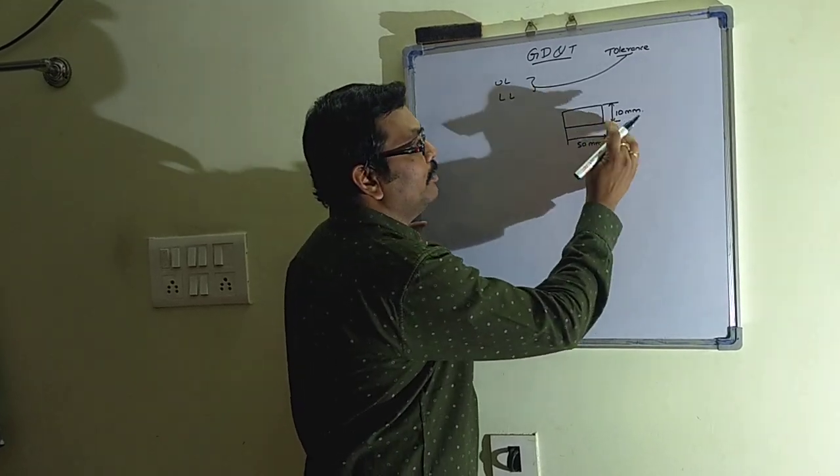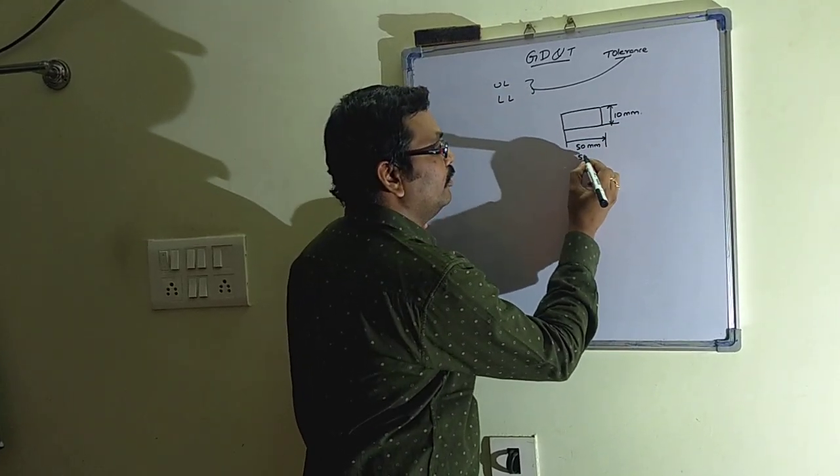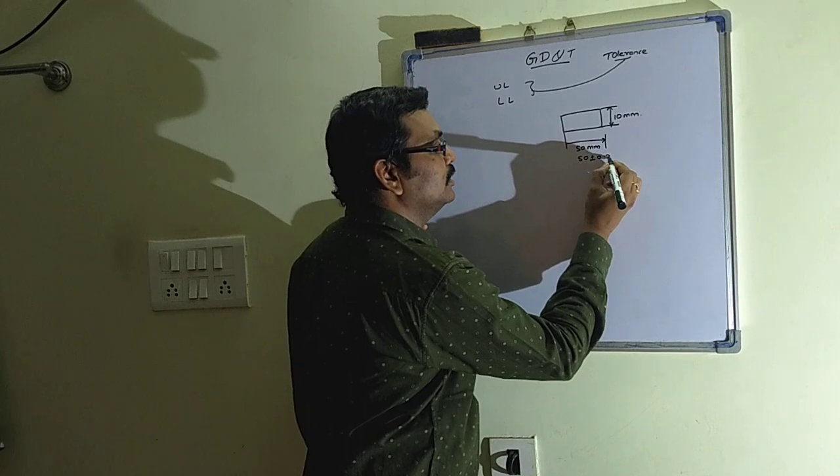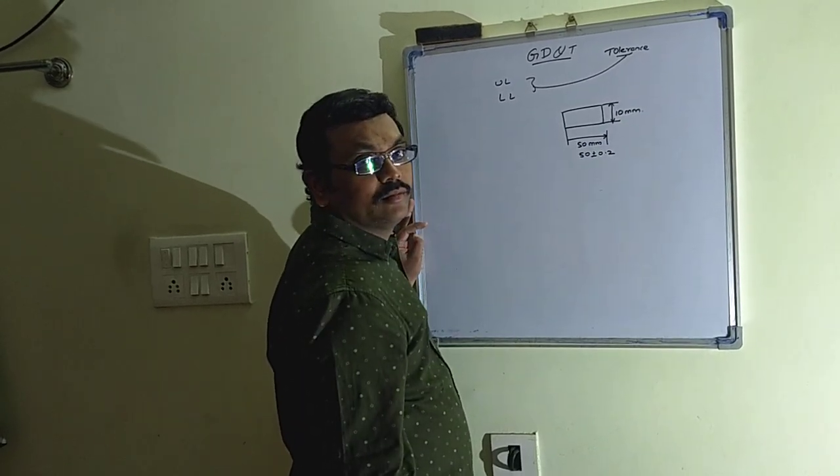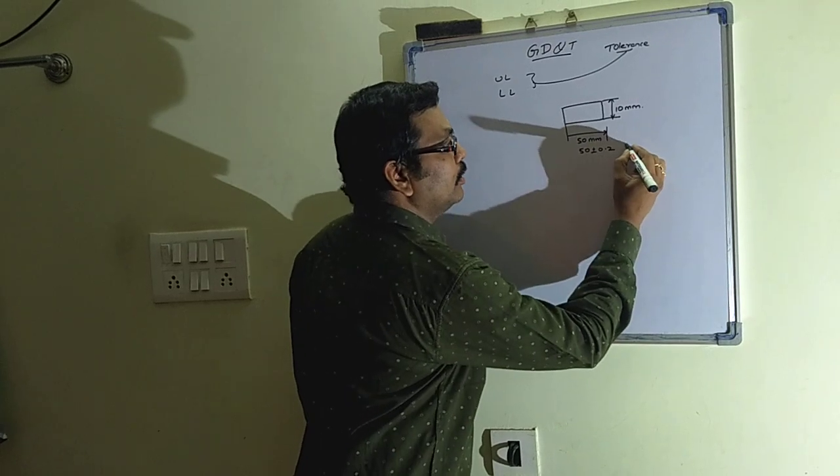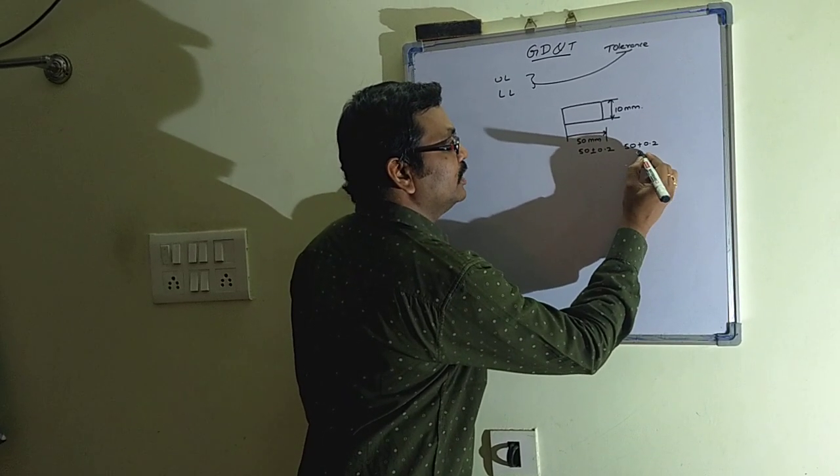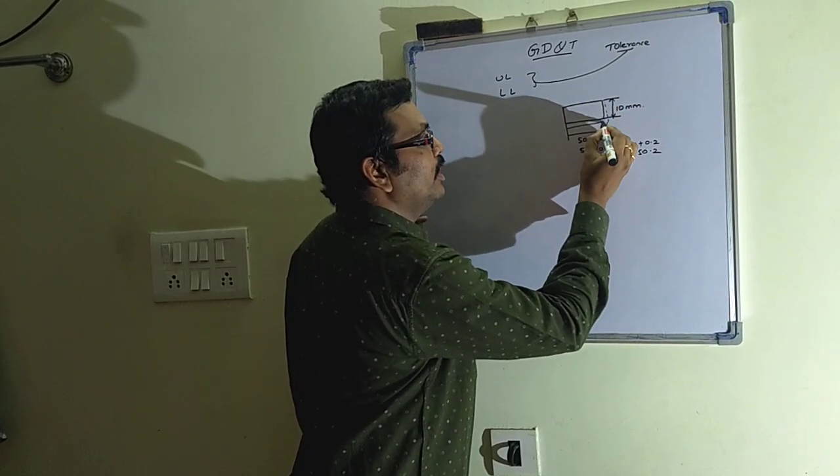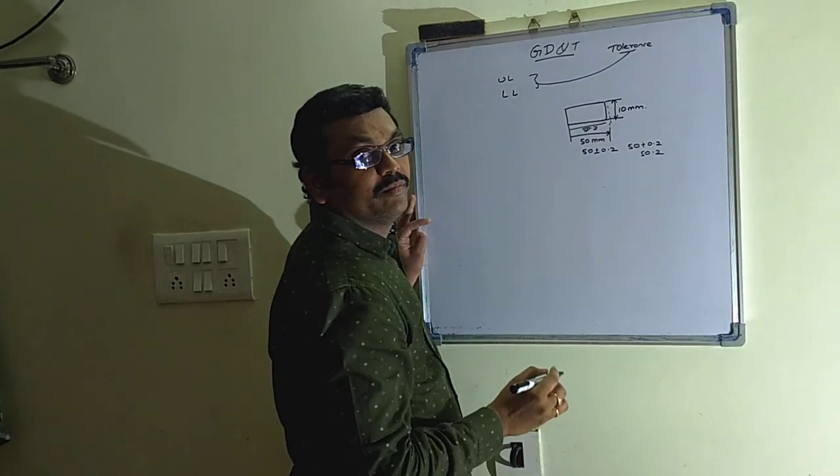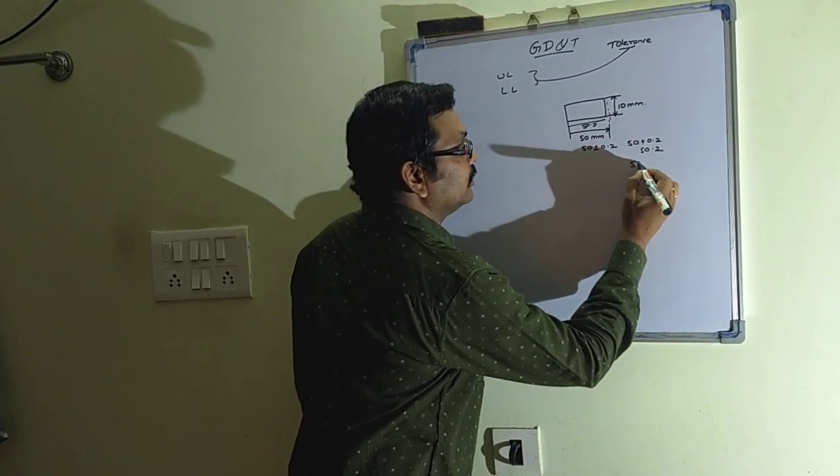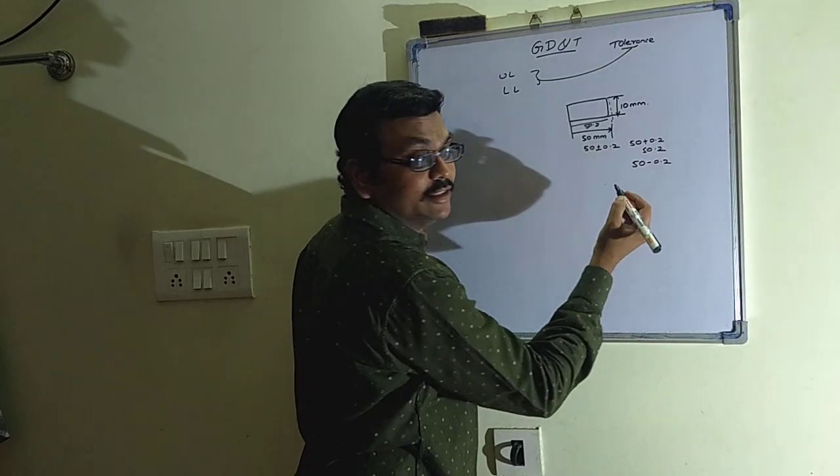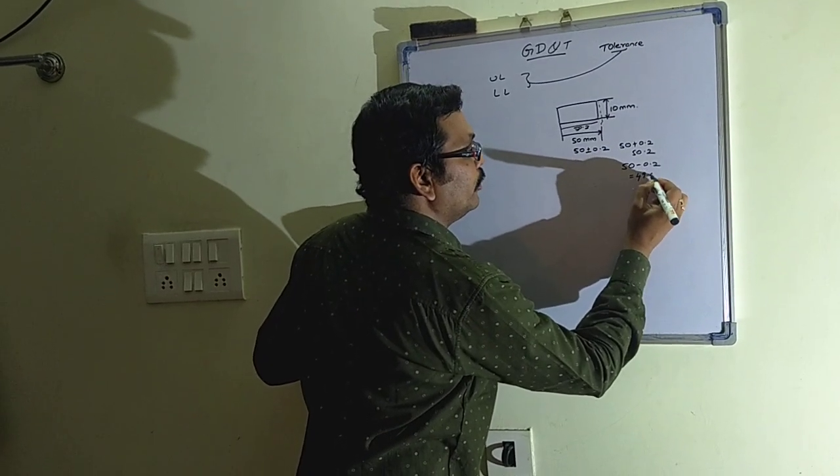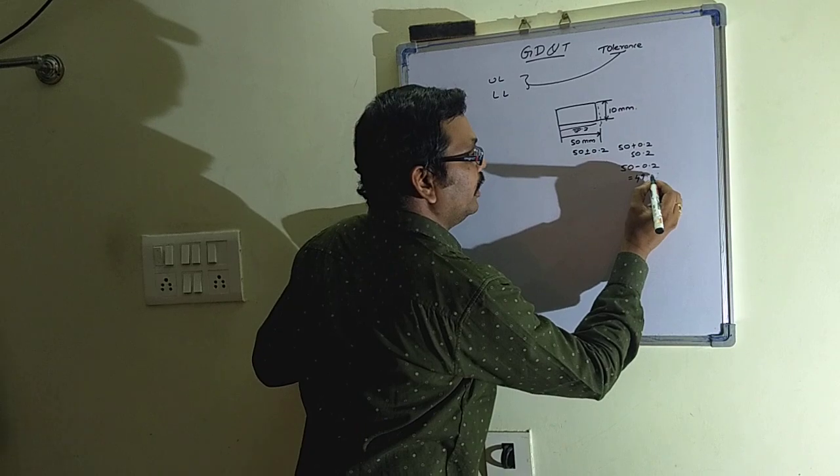What this limit says is upper limit - in the sense 50, this plate can go something around 0.2. 50 plus 0.2 means 50.2. It can go up to 50.2. Again, when it comes to the lower limit, 50 minus 0.2, 49.8.